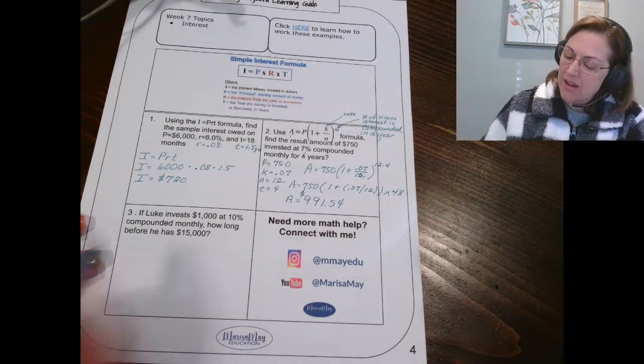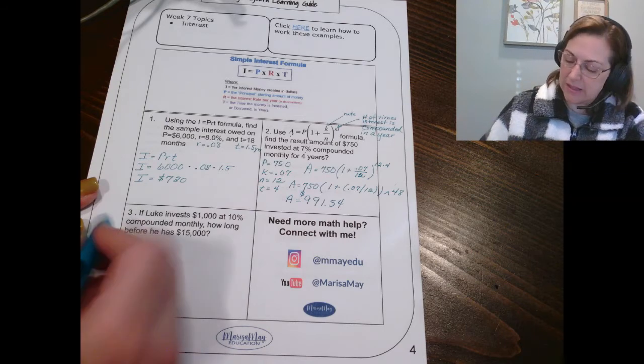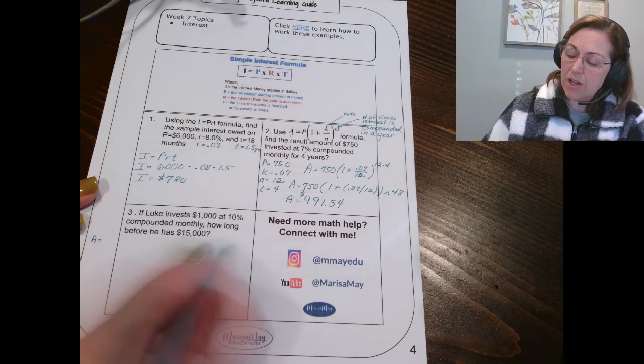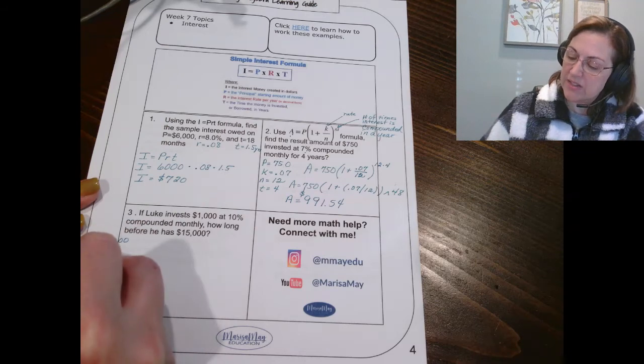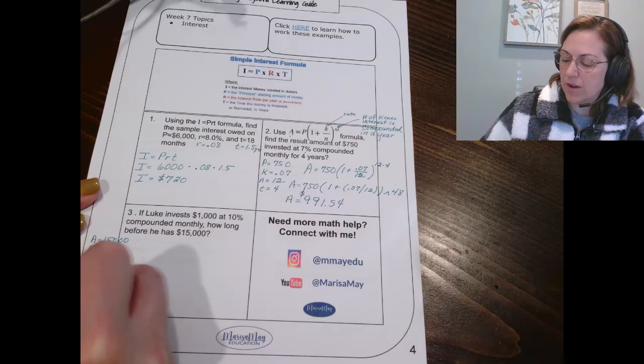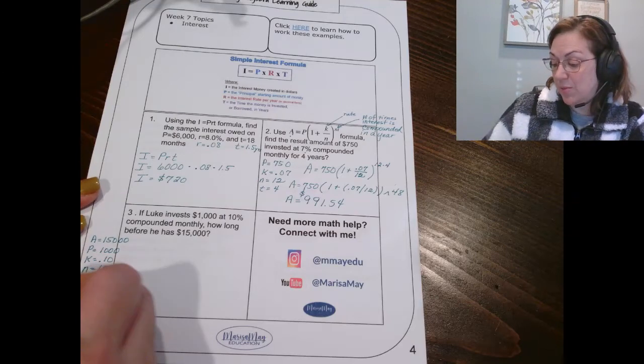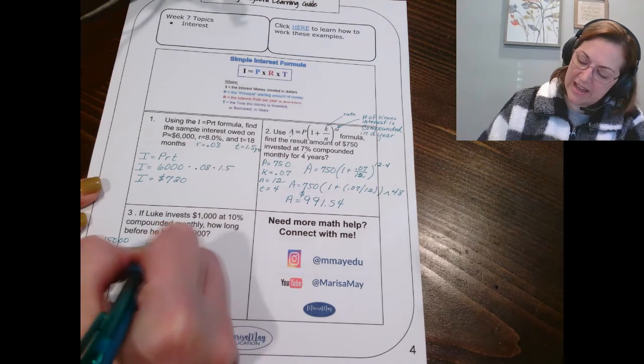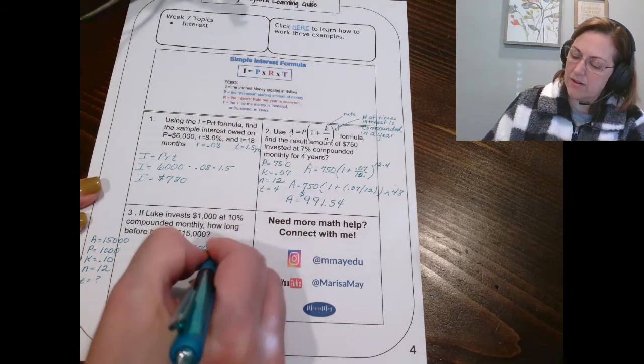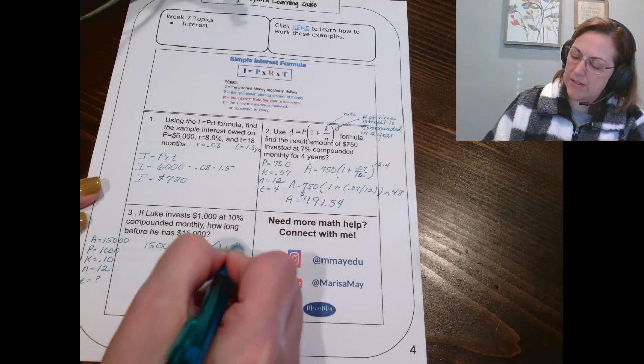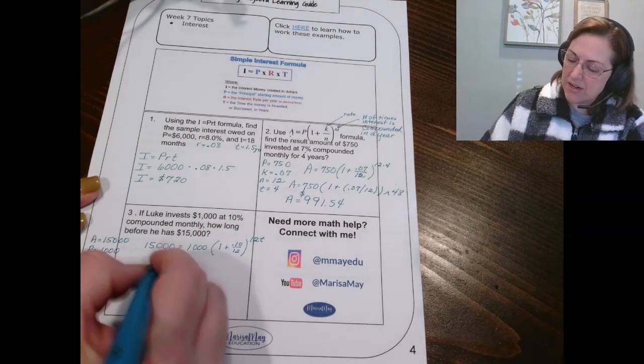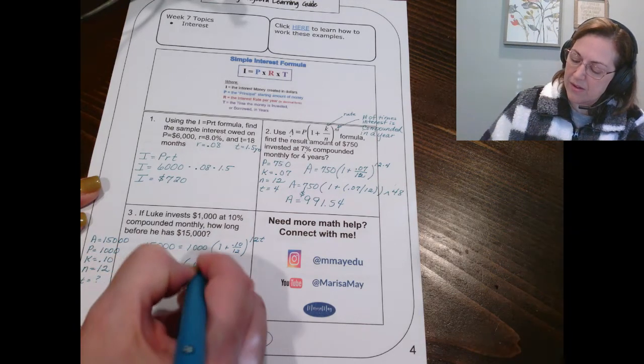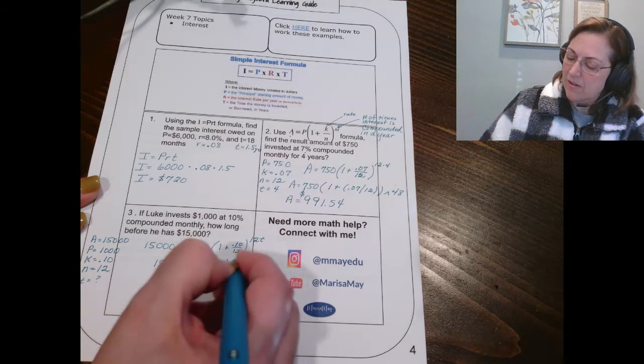And then let's look at number three. Luke invests $1,000 at 10% compounded monthly. So friends, we're saying that how long before he has $15,000? We know then that A is $15,000 and P is $1,000. We know K is 0.10. And N is 12 for the monthly. And then T is what we don't know. Okay. So I've got $15,000 equals $1,000, 1 plus 0.10 divided by 12 to the 12T. Now I'm going to go ahead and divide by 1,000 here. That's going to make that a little easier.